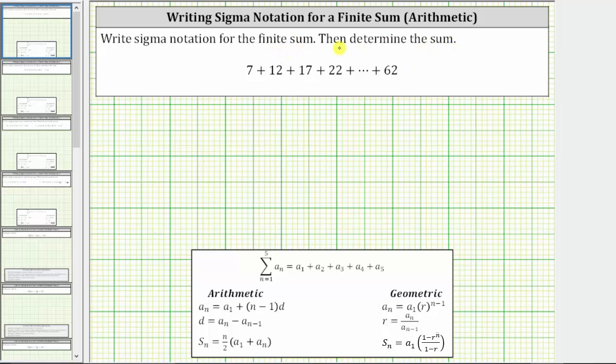Let's first analyze the sum to see if we can determine a pattern. Notice seven plus five equals 12. 12 plus five equals 17. 17 plus five equals 22. And this continues all the way out to 62. Because we add five to determine each successive term,